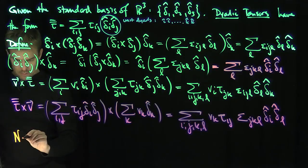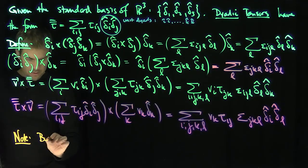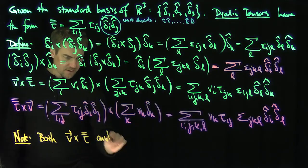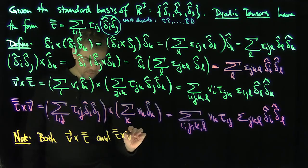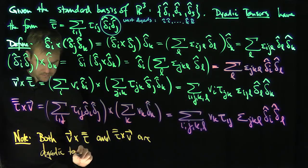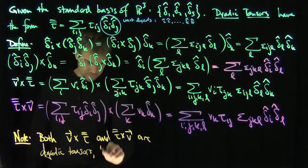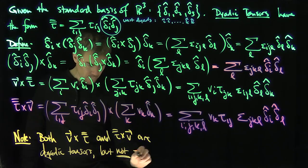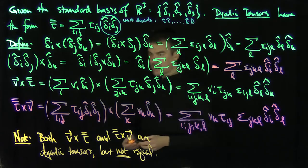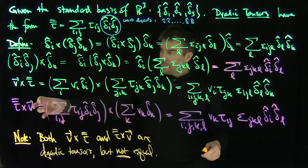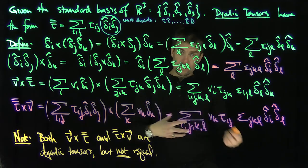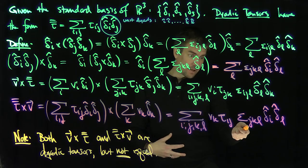An important note: both v cross tau-bar-bar and tau-bar-bar cross v are dyadic tensors, but they are not equal. This allows us to take these identities and incorporate match/mismatch identities, two-delta identities, and all sorts of identities for the Levi-Civita symbols epsilon_jkl.